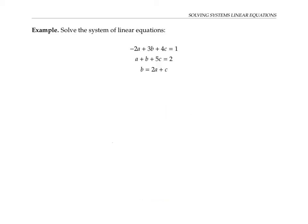If we want to solve the system of linear equations using the method of substitution, the basic idea is to use one of the equations to solve for a variable in terms of the other variables, and then substitute into the other equations. In this example, I noticed that in equation three, I already have B solved for in terms of two A plus C. So that makes it easy to substitute in two A plus C everywhere I see a B in the other equations to get rid of the B variable there.